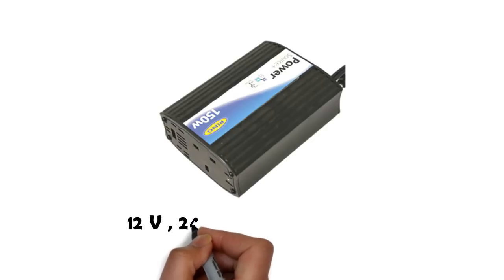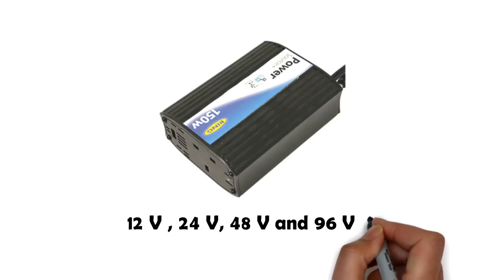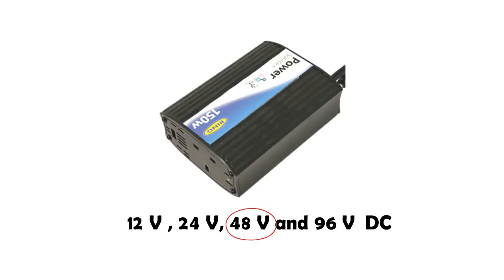That is, they can accept 12 volt DC, 24 volt DC, 48, or even 96 volt DC. Note that 48 volt DC input is the most common type of inverter used for residential solar PV systems, while 12 volt DC input inverters are more commonly used in portable applications.